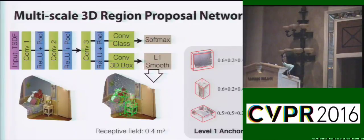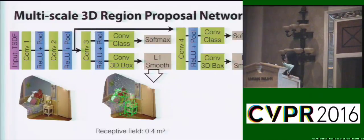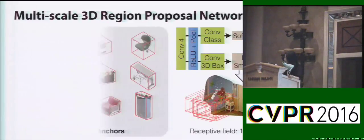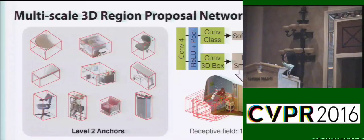To cover big objects, our network has another branch with a larger receptive field equal to 1 meter. Here is a list of the typical anchor boxes for the big objects.